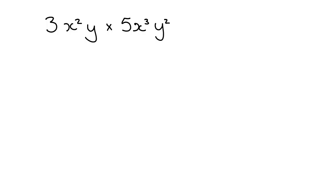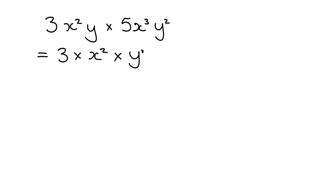They can give us something a lot more complicated. Let's have a look at 3x squared y times 5x cubed y squared. To deal with this one, let's start by writing out what exactly this means. Remember in algebra, when we write stuff just next to each other like 3x squared y, we've just left out the multiplication sign — there is actually a multiplication sign. So what you've got is 3 multiplied by x squared multiplied by y. And remember, a plain y is just y to the power of 1. Then you've got 5 multiplied by x cubed multiplied by y squared.